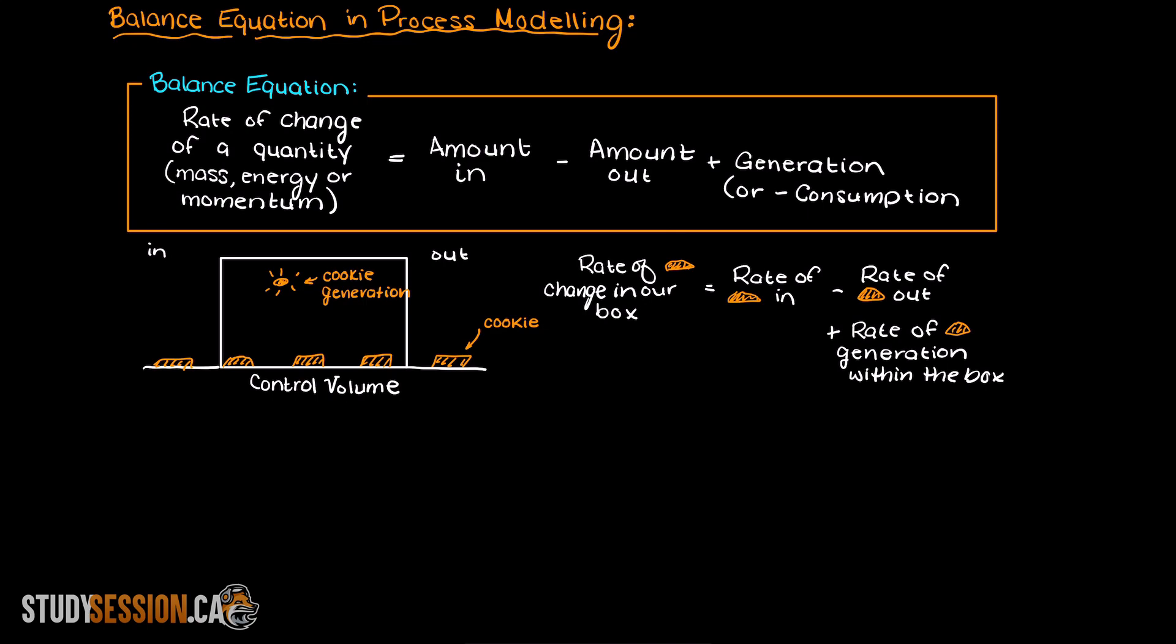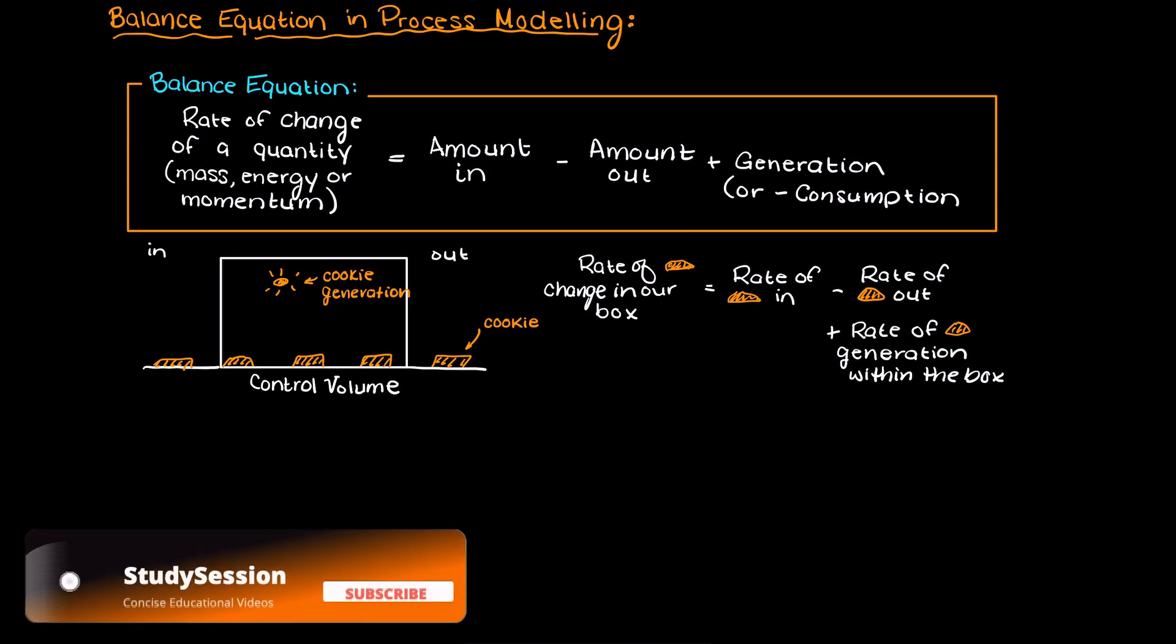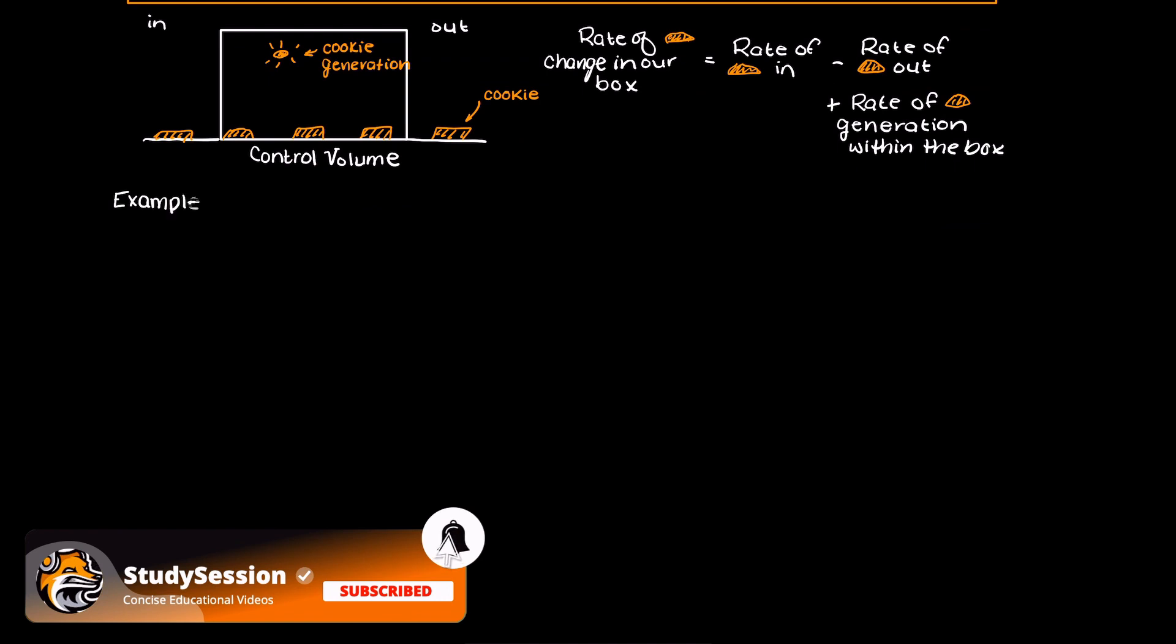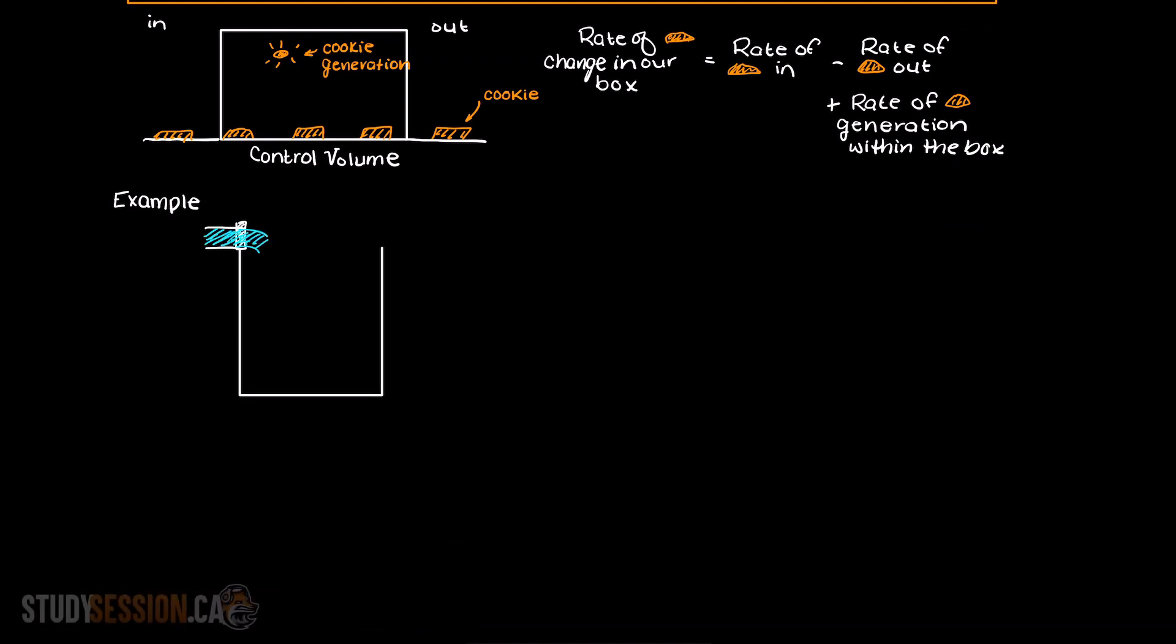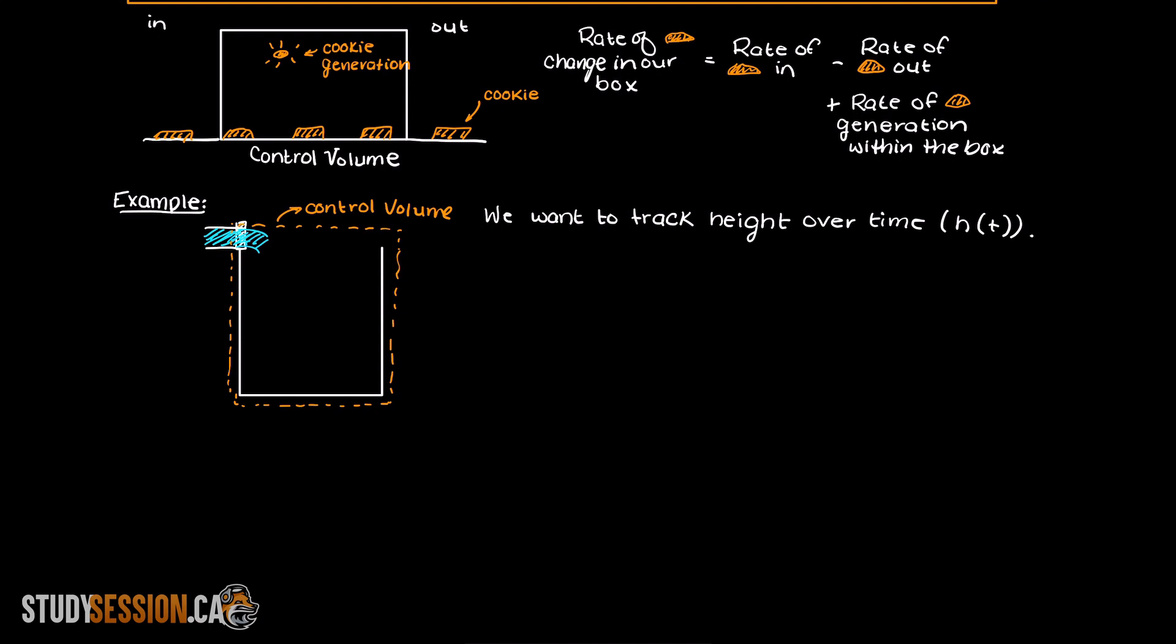Let's perform a rather simple example. Let's create a simplistic process model for how quickly a bucket is filling with water from a tap. So, let's draw a simple diagram of our system as this should always be our first step in any engineering problem. We want to track the height in our bucket over time as it fills up. We know our quantity of interest here is going to be the mass, as energy and momentum have no real relevance here.